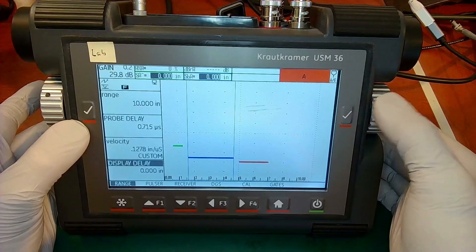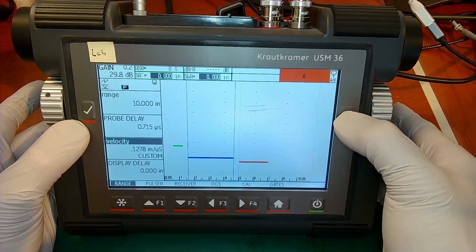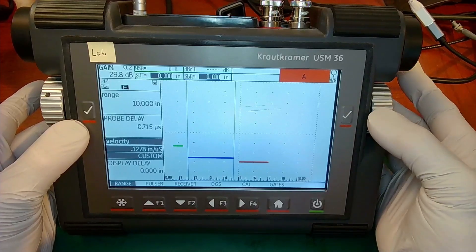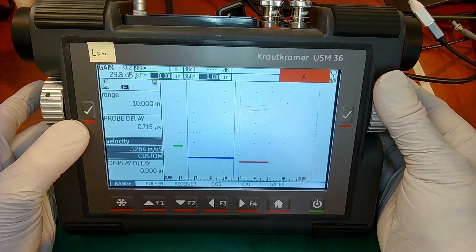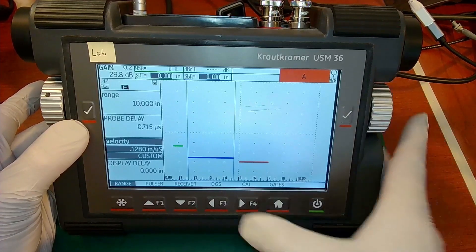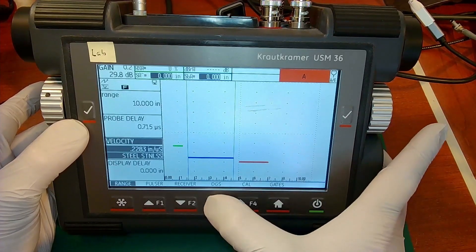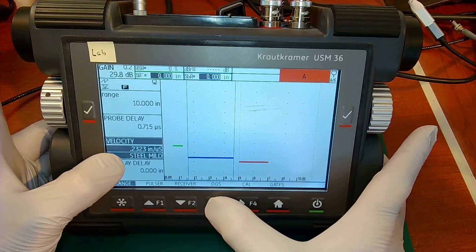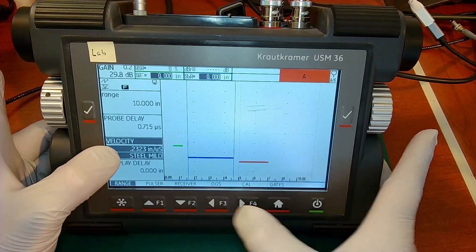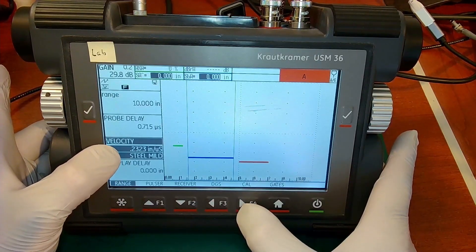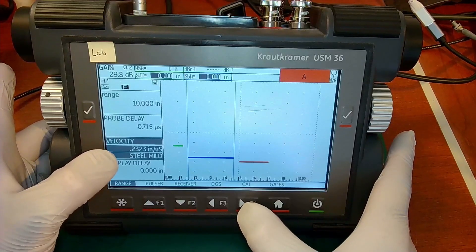If I go to my velocity parameter and select that, I can either adjust the velocity in small increments, or by using the right and left arrow keys, I can parse through a list of materials and see the known or stored velocity for that material. So with the right and left arrows, I can select mild steel, shear velocity.